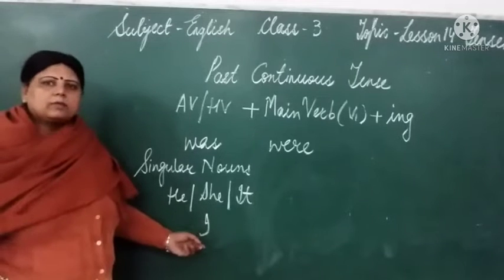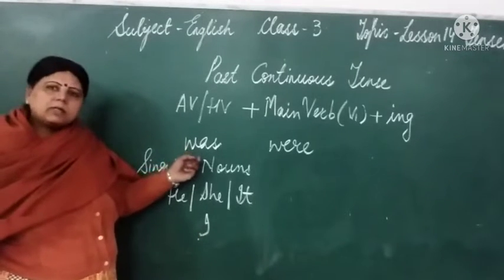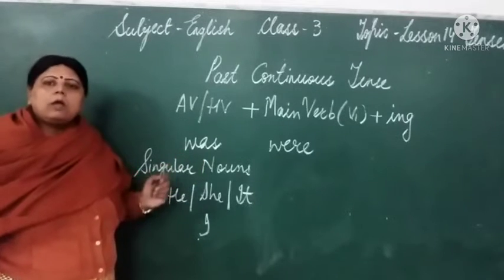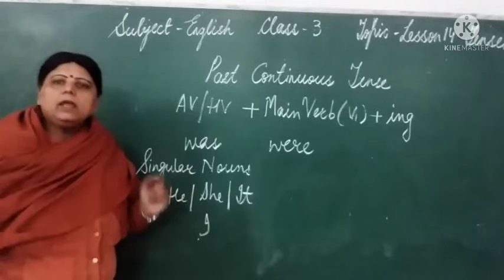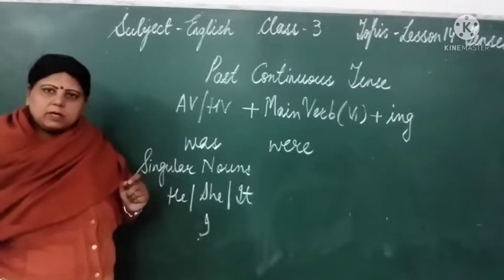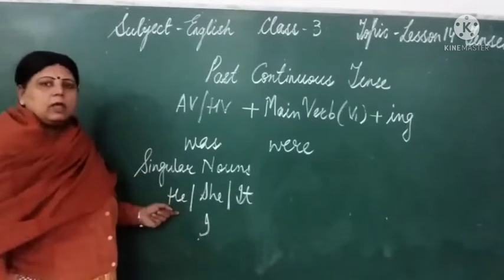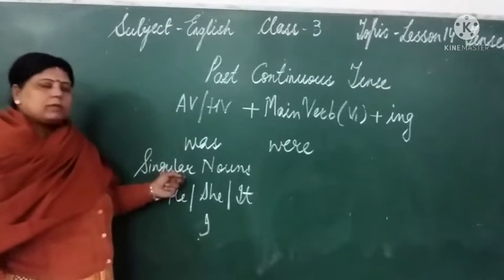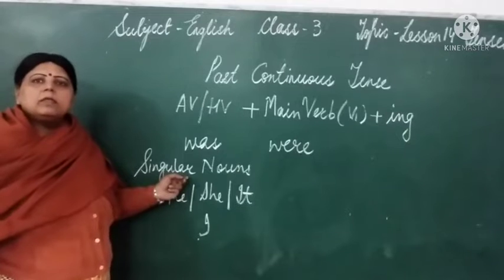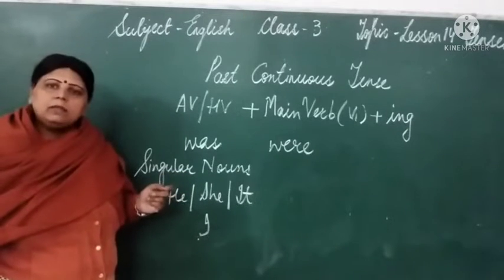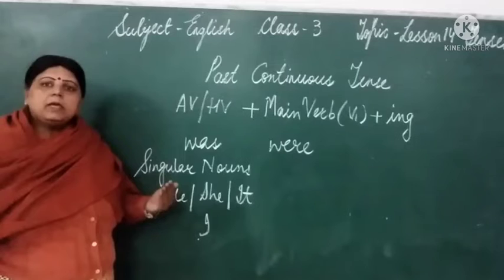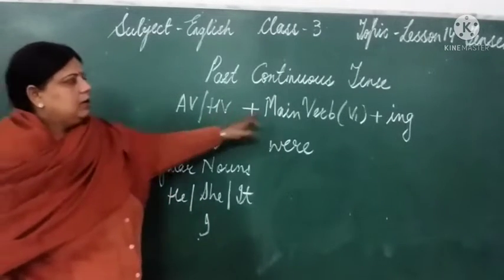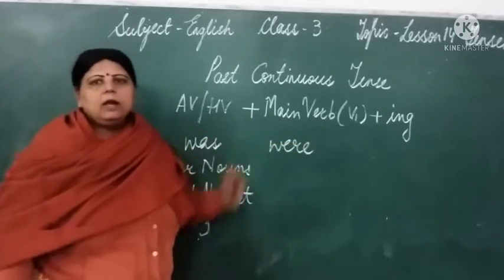I pronoun ke saath hum past continuous mein 'was' use karte hain. For example: I was going to Delhi yesterday. Isi tarah se — he was walking in the garden. Ya koi singular noun agar hum lete hain — the bird was flying in the sky. Humne kya kiya? Humne helping verb liya, main verb aur we added '-ing'.